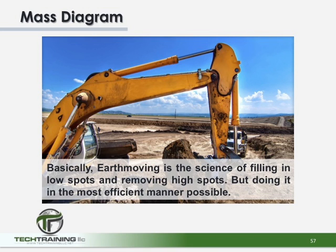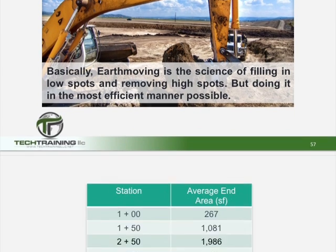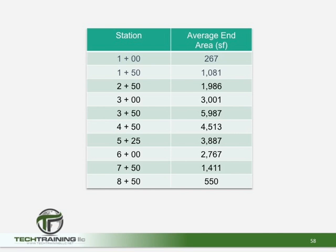So now let's put all of this information together in what is called the mass diagram. What the mass diagram does is allow us to fill in the low spots and cut away the high spots in the most efficient manner possible. Let's start by taking a look at just one section of what a mass diagram worksheet would look like. Here we have some station locations along a given proposed project line as well as some average end areas. Let's do the calculations for net cubic yards based on these numbers.